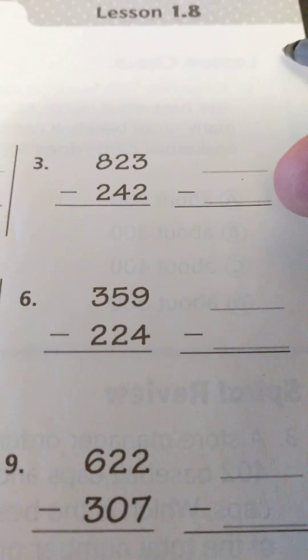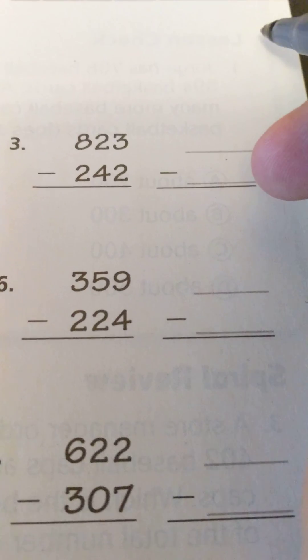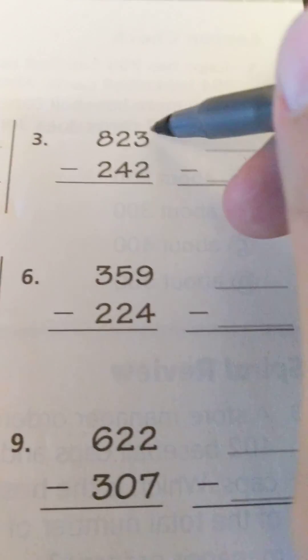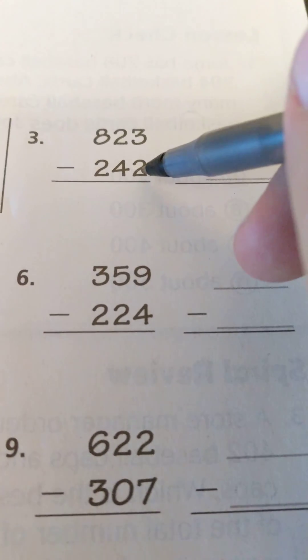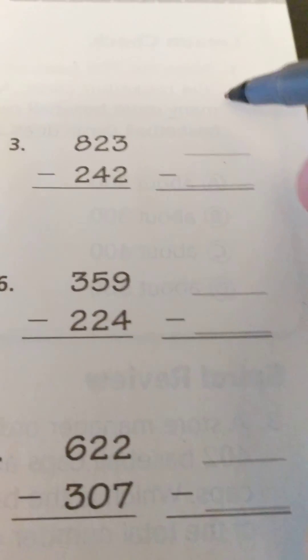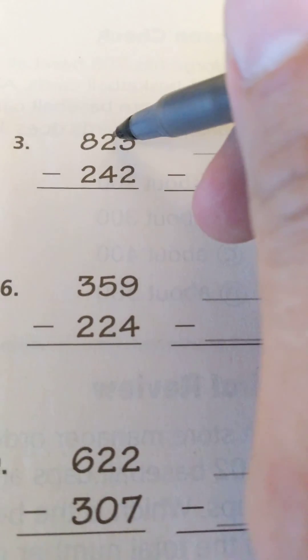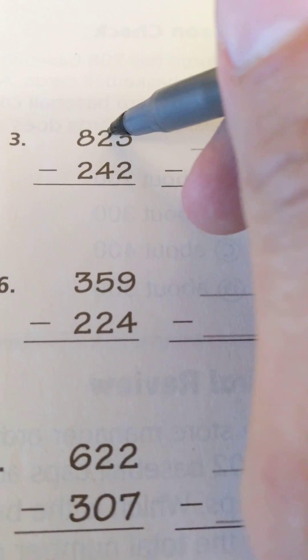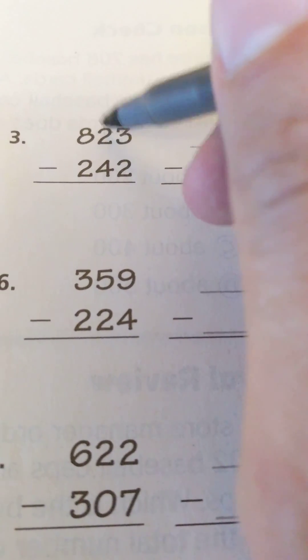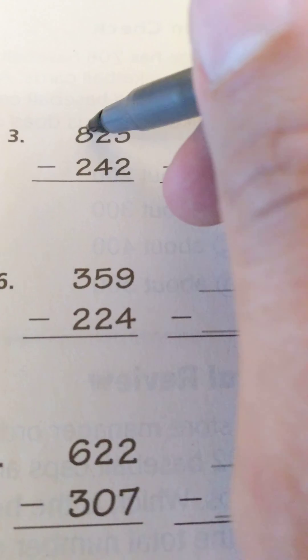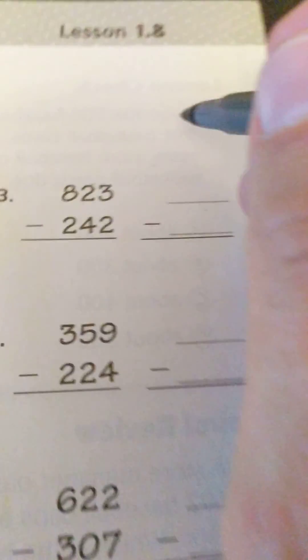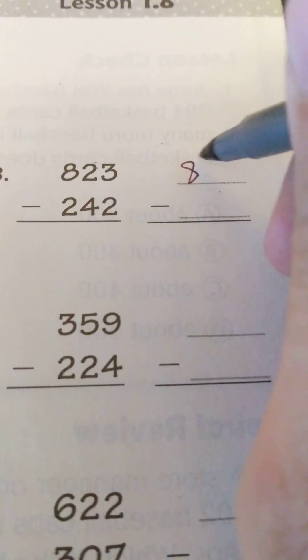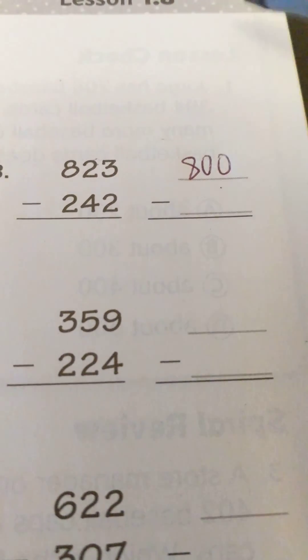I'll go ahead and go over to number three. We have 823 minus 242. So I'm going to round to the nearest hundred again. I'm looking at my tens. I'm not going to change the eight because the number is less than five, so it's going to be 800.